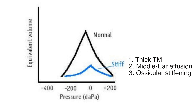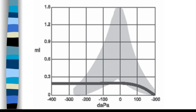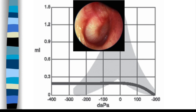If there's no peak, that means there's little movement at all pressures. The problem is not high air pressure in the middle ear, but fluid or something else keeping the tympanic membrane from vibrating. This is highly specific and sensitive for middle ear fluid.